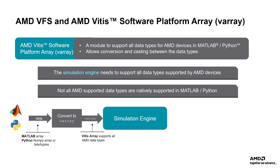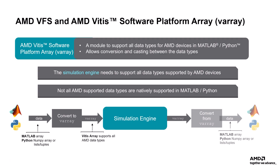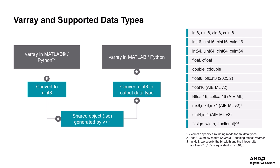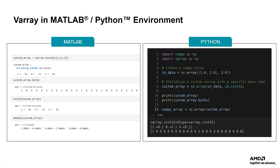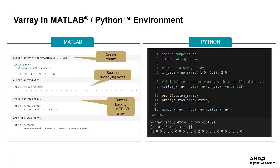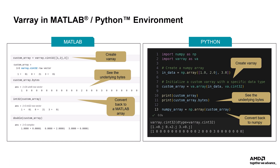The output data, which is in the form of V-Array, is again converted to a regular MATLAB array or Python NumPy array. The flow diagram shows how the Vitus array works with the MATLAB and Python environment with data type conversions, and the list of supported data types are shown on the right. The first example shows the MATLAB environment and the creation of V-Array and underlying bytes, then converting back to the MATLAB array. The second example shows the Python environment and the creation of V-Array from a NumPy array, a list, or a tuple, and then converting them back. One must specify an AMD VFS data type while using a list or tuple.